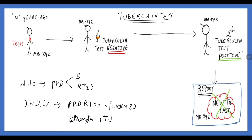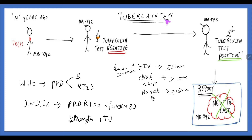Coming to the tuberculin test, WHO has given PPD-S type and RT-23 as the accepted standard tuberculin. In India, we use PPD-RT-23 with Tween 80 at a standard strength of 1 TU. For the result, we measure the transverse diameter of the induration. For immunocompromised and HIV individuals, it is around 5 mm due to low immunity. For children less than 4 years, it is 10 mm or more. For higher risk people, it can be more than 15 mm.